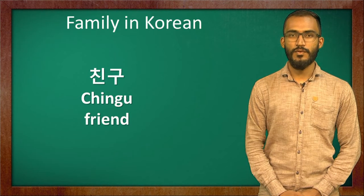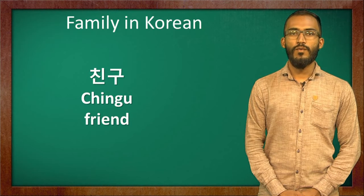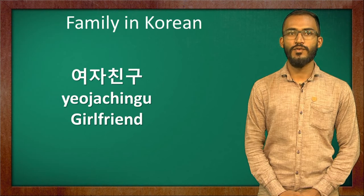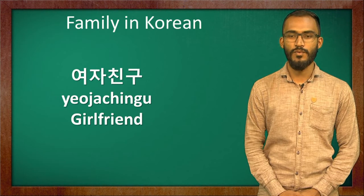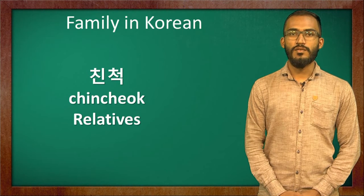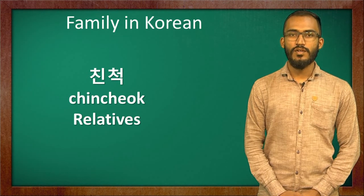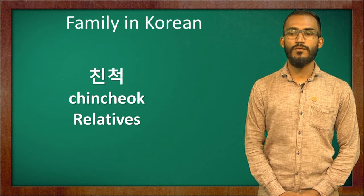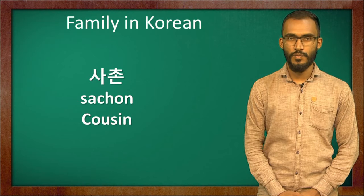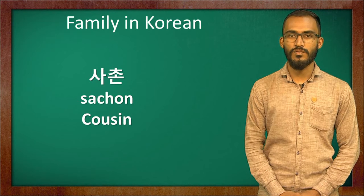For friend, the Korean word is 친구. For boyfriend, the Korean word is 남자친구. And for girlfriend, the Korean word is 여자친구. For any relatives in Korean, it's called 친척. 친척 is the Korean word for relatives. And for cousin, the Korean word is 사촌.